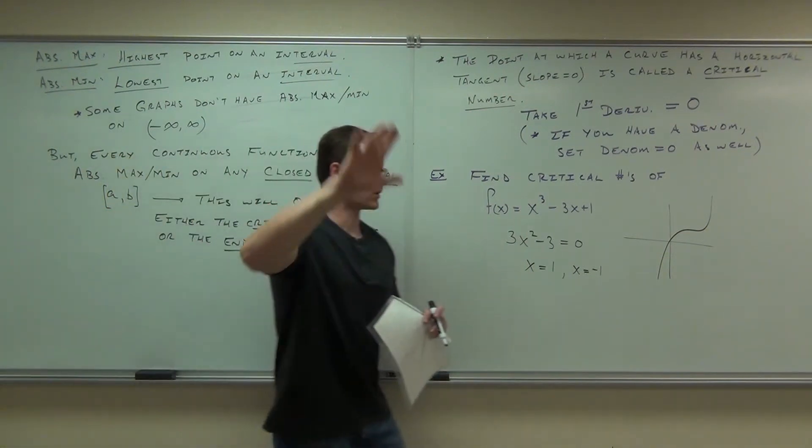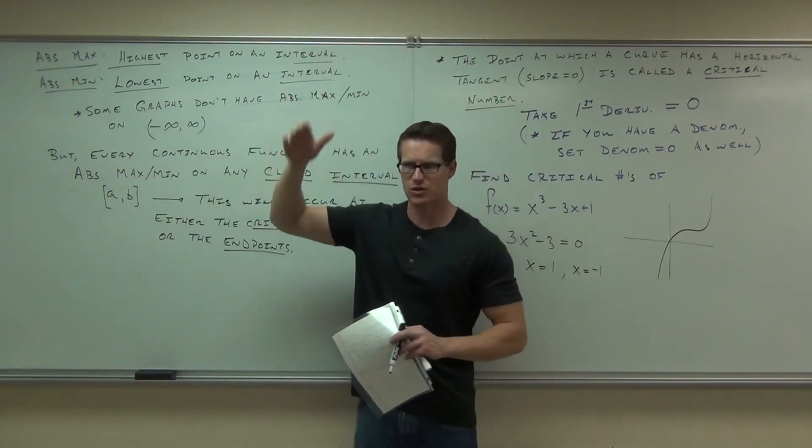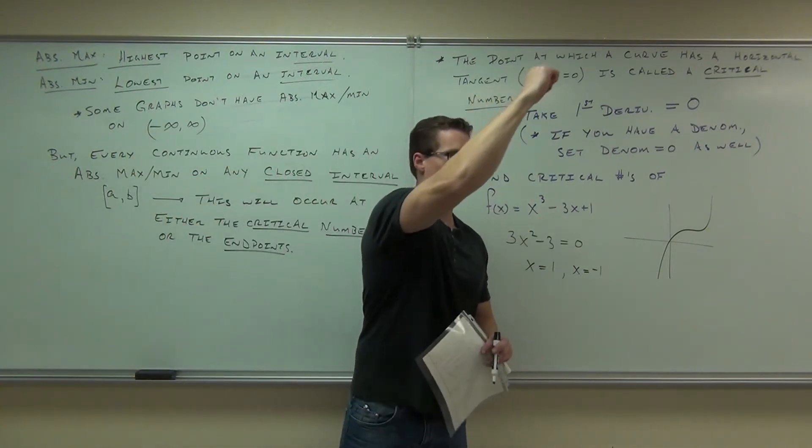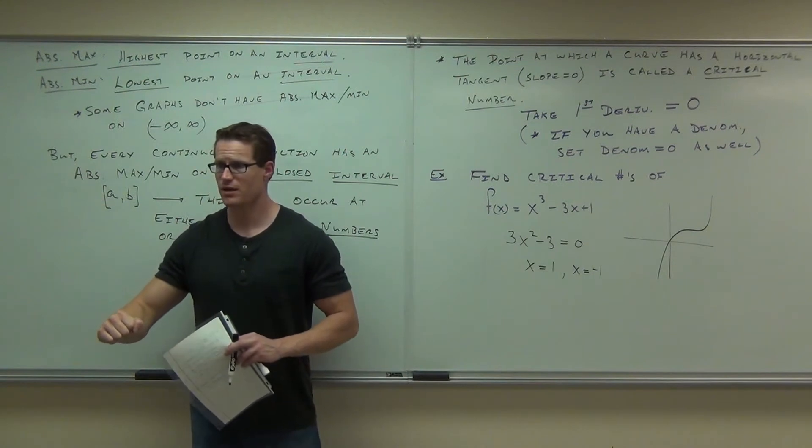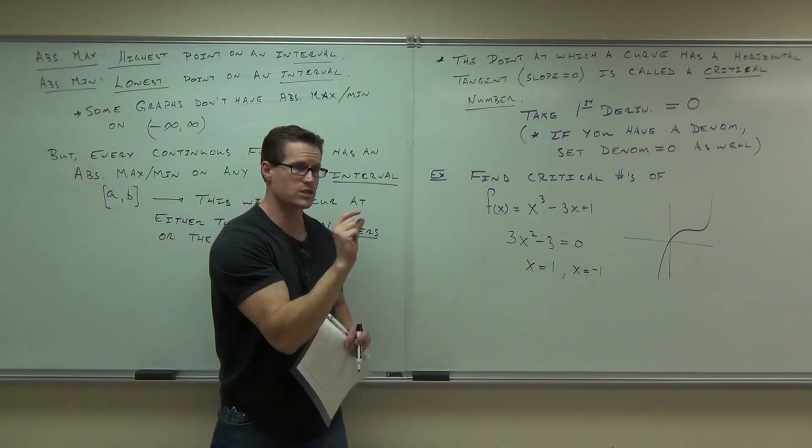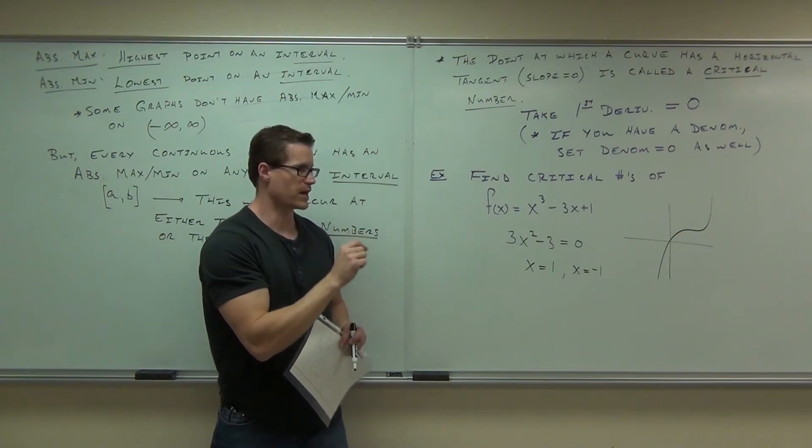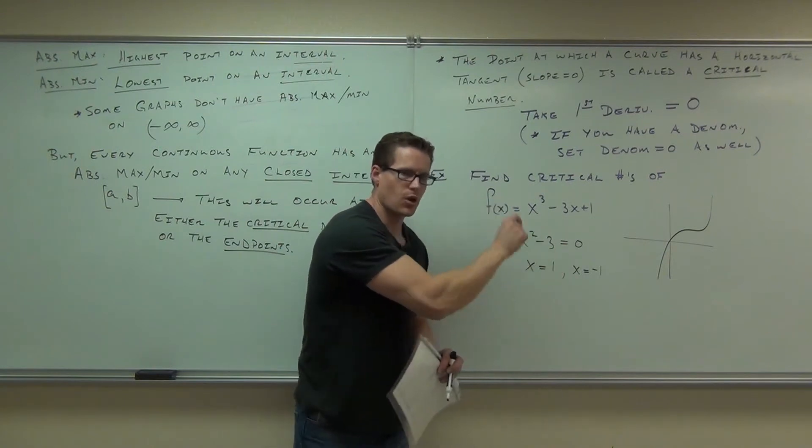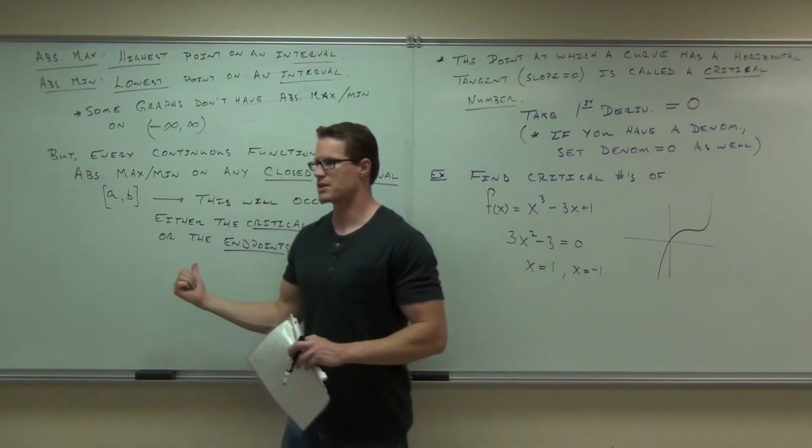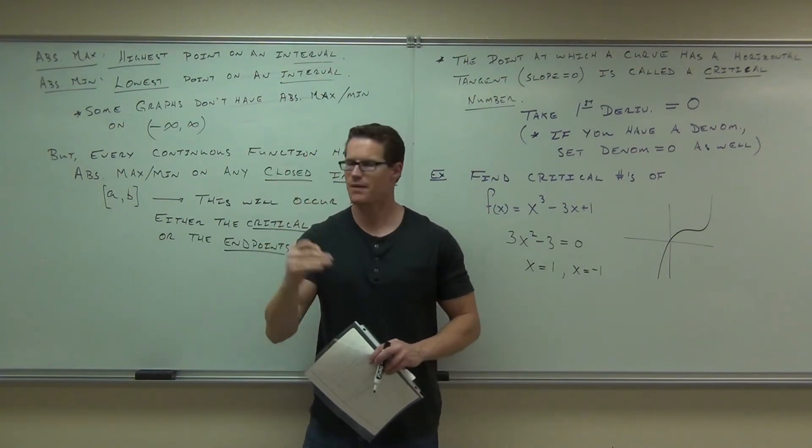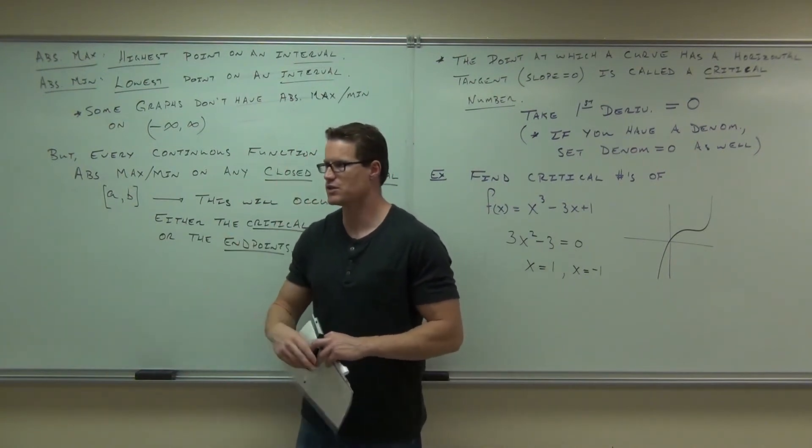This will occur at either a critical number or the end point. Can you raise your hand if you understand the logic that it's going to be one of those two places? Either it's going to be where a function change from going up to going down, going down to going up, or at one of the stopping points of our interval. Do you follow me on that? It's got to be one of those places. Which means there's only a few points you need to check when you find an absolute max min. You're going to be checking your critical numbers by plugging them into your function, but you're also going to check your end points. We'll do some examples of that in just a second. And whatever's the highest one, that's your absolute max. Whatever's your lowest one, that's your absolute min. That's it. That's all we're going to have to do.